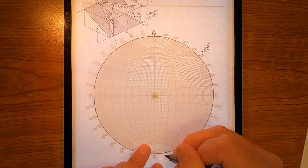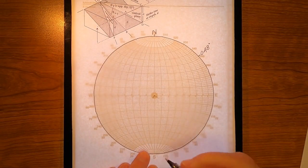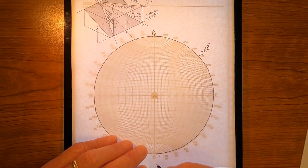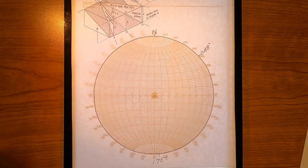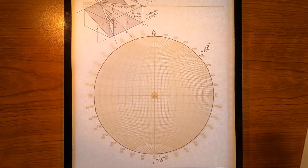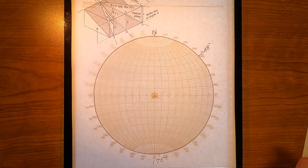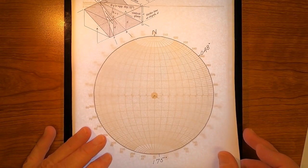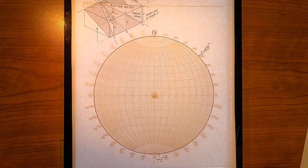And 175, that's right there. I'll just label it 175. So, what we're given are these vertical angles, these apparent dips. In the direction 048, the apparent dip is 22 degrees. In the direction 175, the apparent dip is 16 degrees.